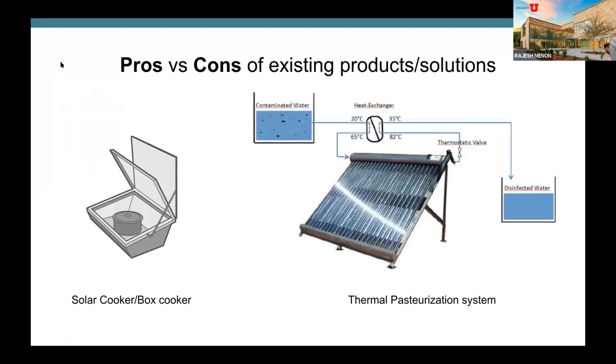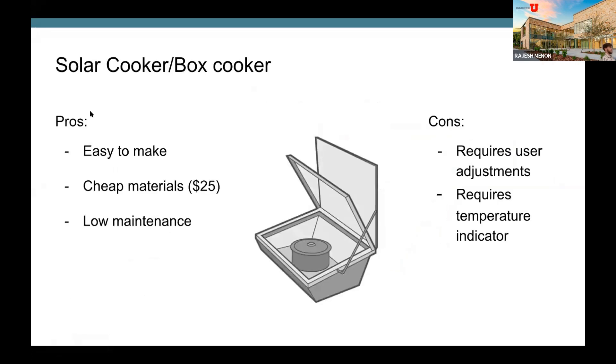Now let's take a look at the pros and cons of some existing products. So we have the solar cooker and the solar thermal pasteurization system. For the solar cooker, first it's easy to make. There are like a lot of DIY projects, so you can watch online and make your own solar cooker. And it's also cheap, like you can make them from cheap materials and they don't require a lot of materials.